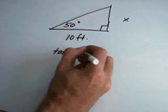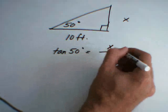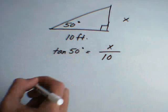We know that the tangent of 50 degrees is equal to the length of its opposite side divided by the length of its adjacent side.